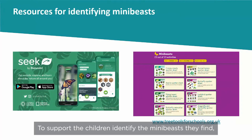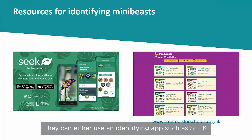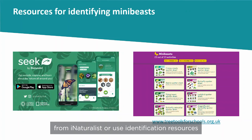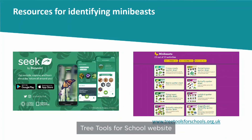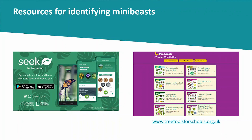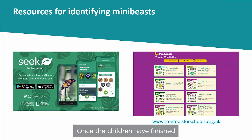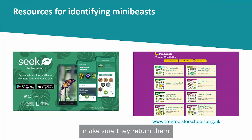To support the children in identifying the mini-beasts they find, they can either use an identifying app, such as Seek from iNaturalist, or use identification resources, such as those on the Woodland Trust's Tree Tools for Schools website. Once the children have finished observing the mini-beasts, make sure they return them to where they found them.